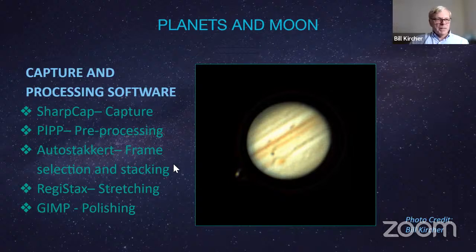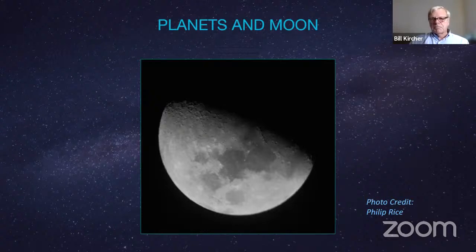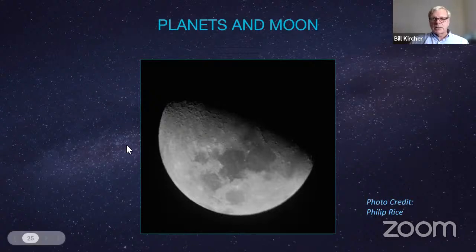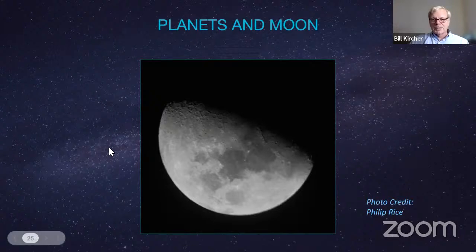Almost finished — let's talk about the moon. Piece of cake compared to planets. You can use a cell phone, a DSLR with a lens, or a dedicated imaging camera. You can use the movie technique for something really sharp, take a series of pictures and choose the best, or stack a whole lot of pictures. The moon is very bright, big, easy to find, and accommodating because it keeps coming back every month. Jupiter and Saturn disappear for a while; Mars is only in opposition every two years. So the moon is a great subject — if nothing else works, try the moon.